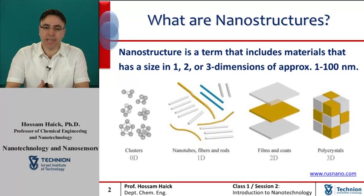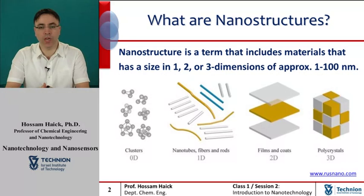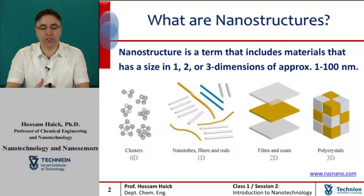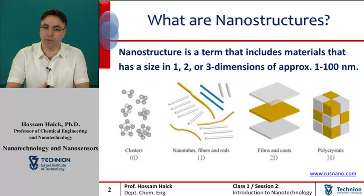A nanostructure is an object that has at least one dimension in the range of 1 to 100 nanometers. In describing nanostructures, it is needed to differentiate between the number of dimensions on the nanoscale.